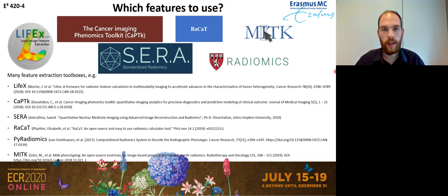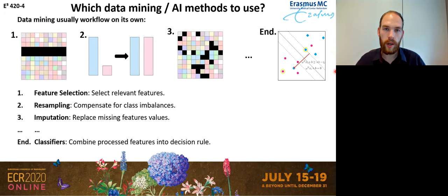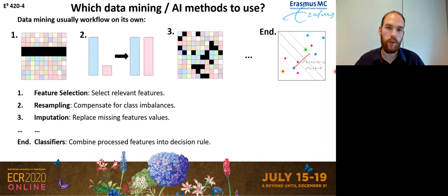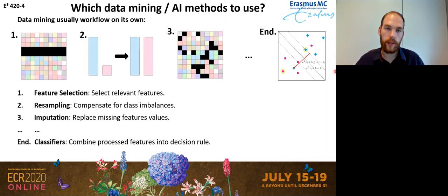Once you pick a toolbox, we arrive at which data mining methods to use — and I use 'data mining' rather than 'AI' because this is usually not a single method but rather a pipeline or workflow of methods. Methods you may use in this data mining workflow include, for example, feature selection methods — which from all the extracted features select only relevant ones for your application — resampling methods, if there's an imbalance in your data set (for example, more malignant than benign tumors), feature imputation methods where values are missing for specific patients, and many more approaches. Usually people end with a classifier — machine learning methods that use the processed features to combine them into a decision rule.